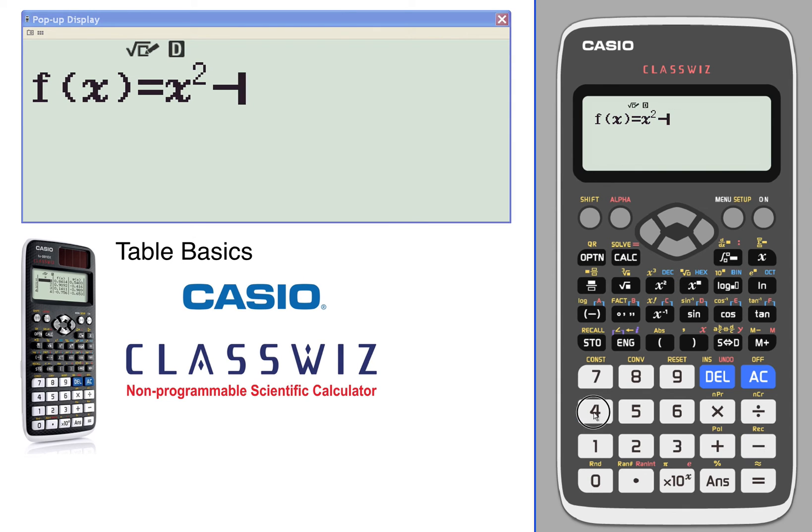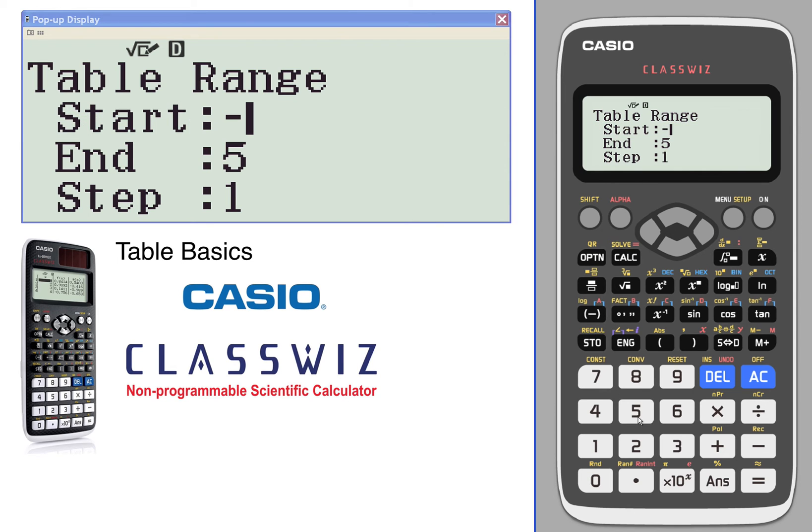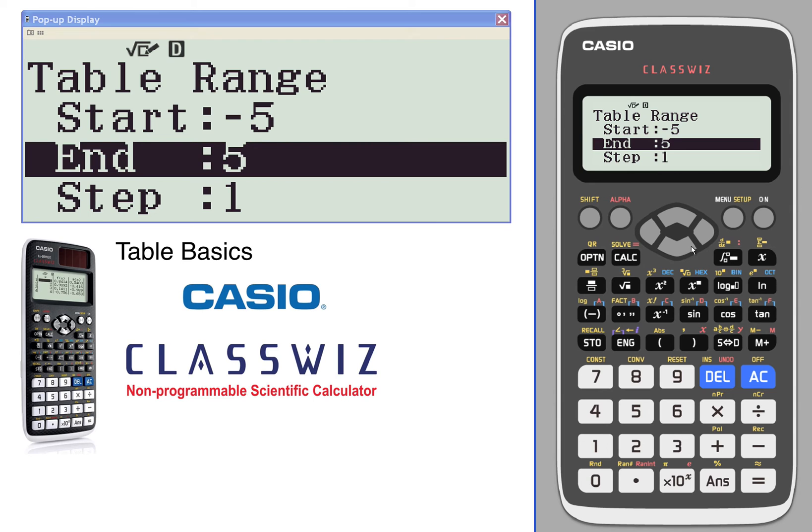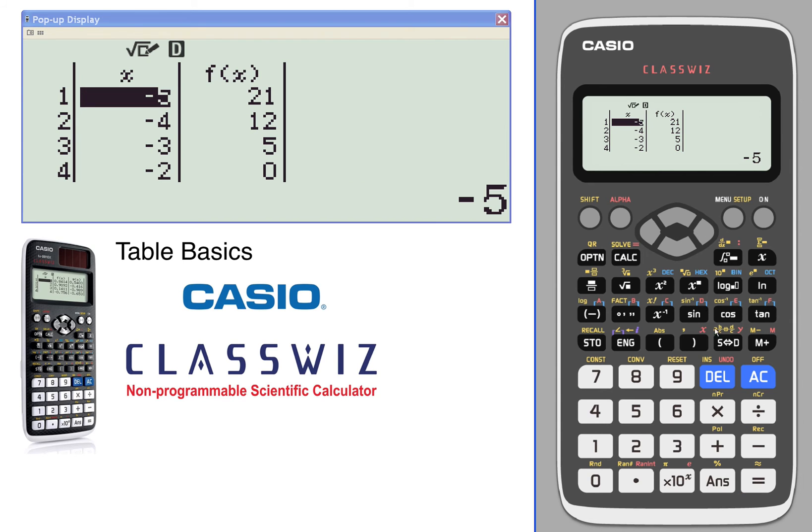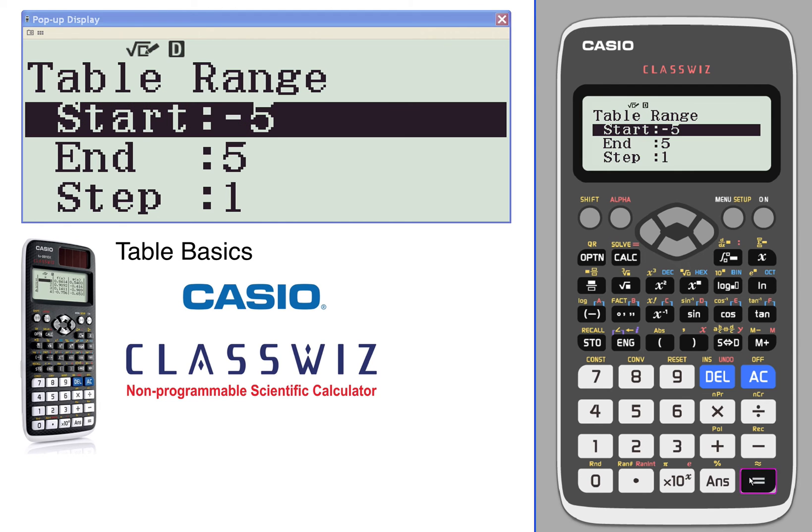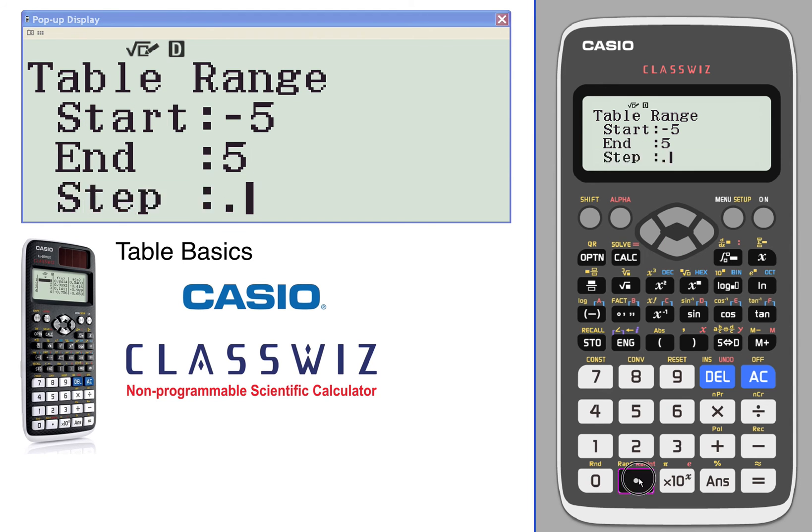We're going to start with negative five and go to five. For our step values, let's set steps of 0.5.